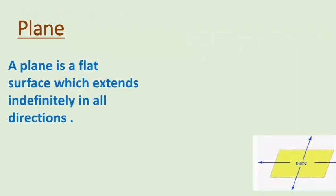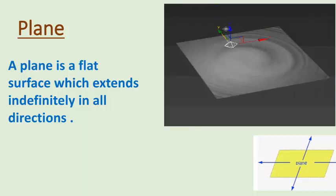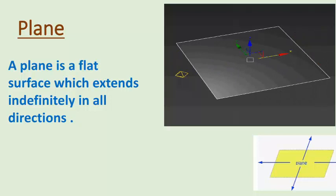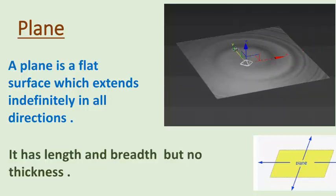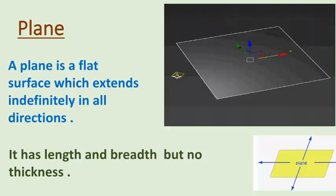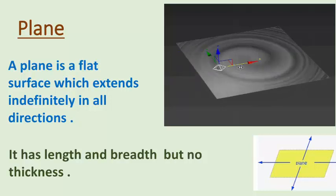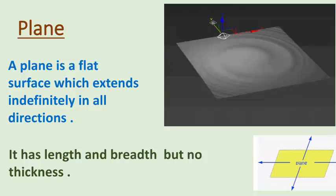A plane is a flat surface which extends indefinitely in all directions. As you can see on the screen, we have a plane that is a flat surface extended indefinitely in all directions. A plane has length and breadth but no thickness, so it cannot be drawn completely on paper. In practice, only a portion of a plane is drawn and represented by a parallelogram or rectangle.